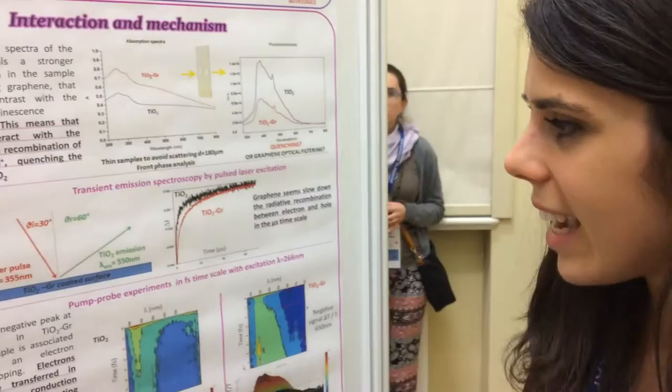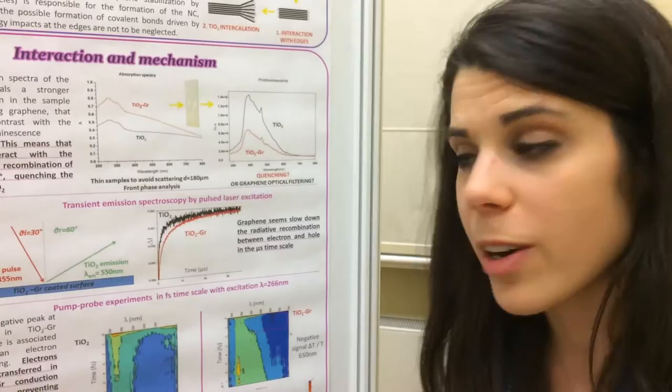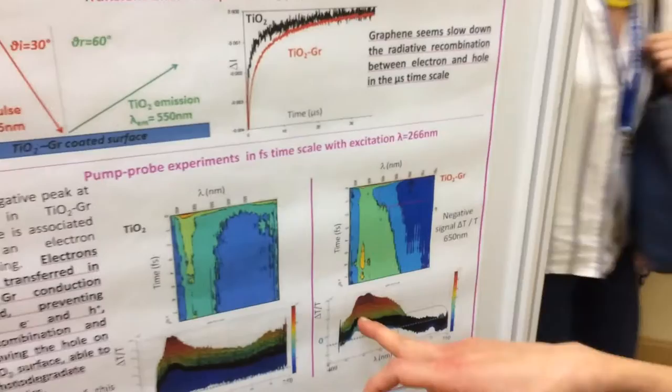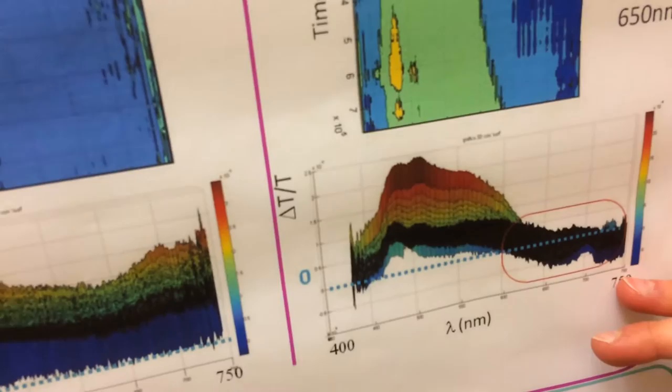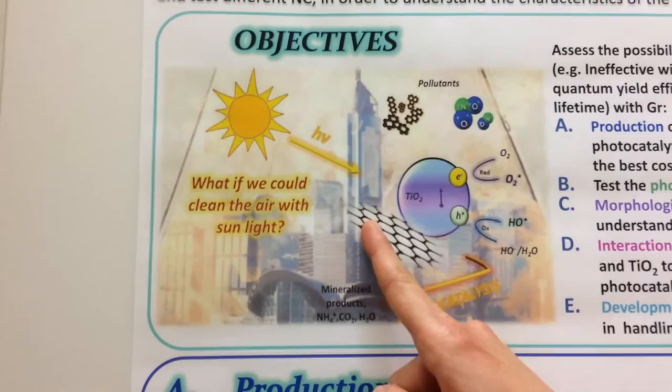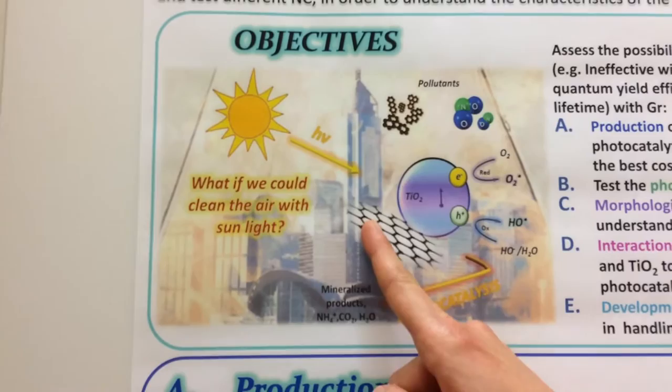For the first time, we could prove that there is an electron transfer between graphene and titanium dioxide. This absorption peak appears in the presence of graphene, and this strong absorption reveals the electron transfer between titanium dioxide and graphene. This means that when electrons move to the surface of graphene, holes are able to react with water in the environment, producing reactive oxygen species that can easily photo-degrade the pollutant.